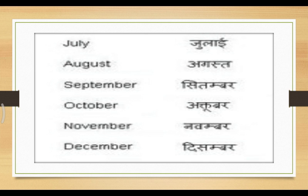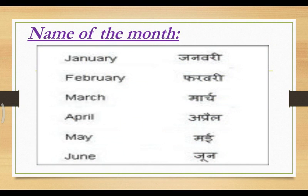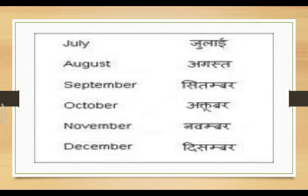Again one time: January, February, March, April, May, June. Next month: July, August, September, October, November, December.